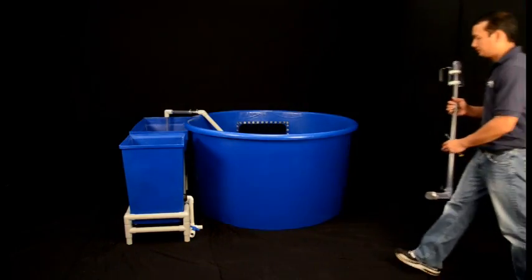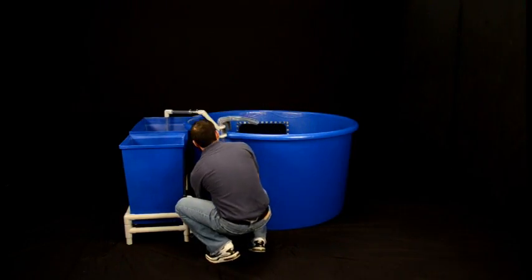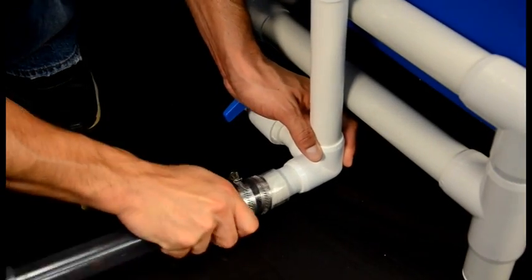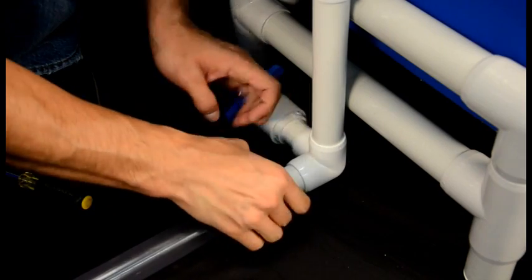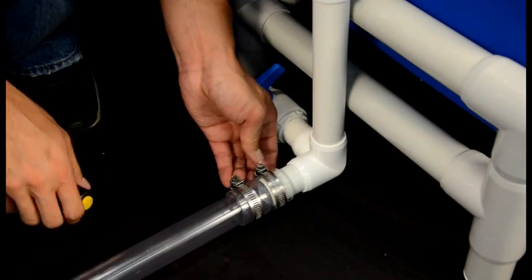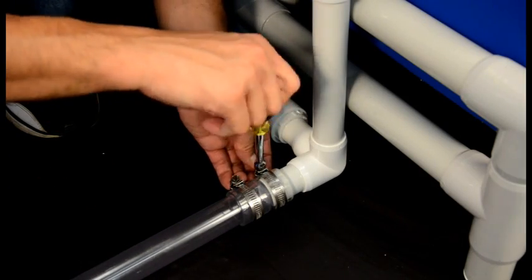To install the return, hang the return spout on the tank wall with the spout pointing inside the tank. Connect the opposite end to the biofilter outlet. This could prove to be difficult. Use only water as lubrication, as other substances could foul the water. Once tubing is connected, use your nut driver to secure this connection.